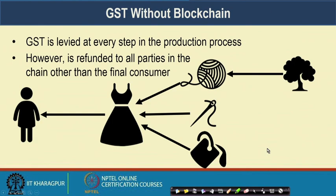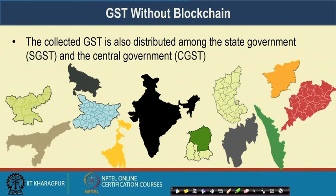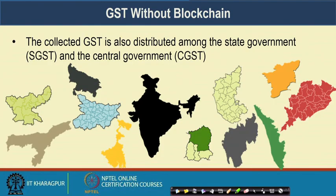The entire idea in GST is like this: the GST is levied at every step in the production process, however it is refunded to all parties in the chain other than the final consumer. The final consumer will pay the entire GST, whereas the intermediate production houses and companies at intermediate stages of the chain will get refunded the amount of GST they paid whenever they purchased the raw materials. The collected GST over a particular product then gets distributed among the state government and the central government as per Indian GST rules.